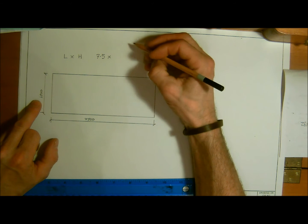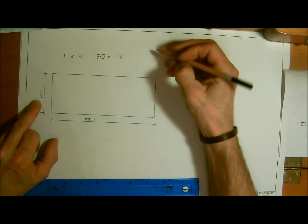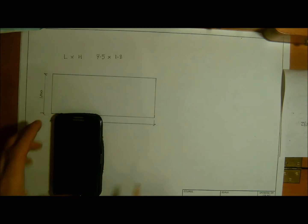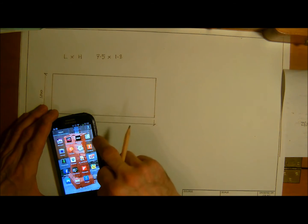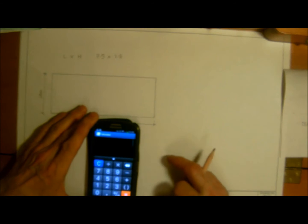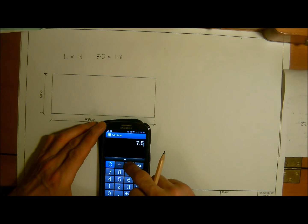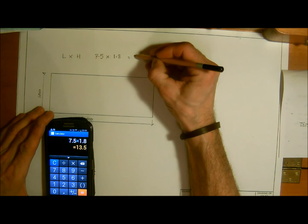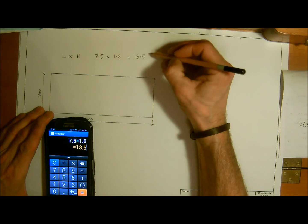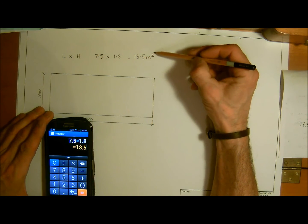Times 1800 millimeters, that will be 1.8 meters. So we have our calculator here, and we're going to find this out. We just put in 7.5 multiplied by 1.8 equals, so we can see here that this wall is 13.5 meters squared.